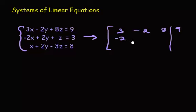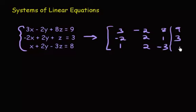The second row would be negative two, two, one, and three. And then one, two, negative three, and eight. So here's our augmented matrix, and we're going to do our row operations on this one.